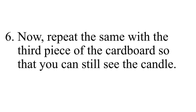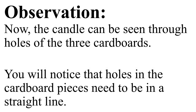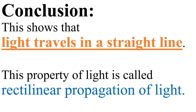Step number six: now repeat the same with the third piece of cardboard so that you can still see the candle. Observation: the candle can be seen through the holes of all three cardboards. You will notice that the holes in the cardboard pieces need to be in a straight line. Conclusion: this activity shows that light travels in a straight line, and this property of light is called rectilinear propagation of light.